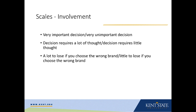For involvement, we have three items as well: 'very important decision' or 'very unimportant decision'; 'requires a lot of thought' or 'decision requires little thought' — and you might think that's a thinking scale, but it isn't. A lot of thought really reflects effort that you put in. And then 'a lot to lose if you choose the wrong brand' or 'very little to lose if you choose the wrong brand.'